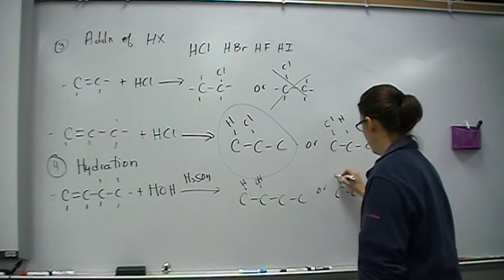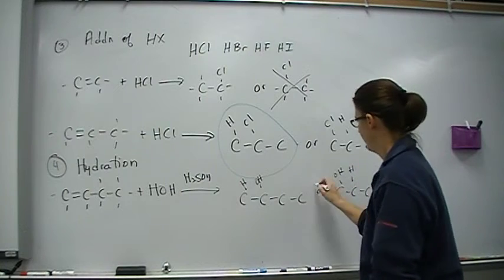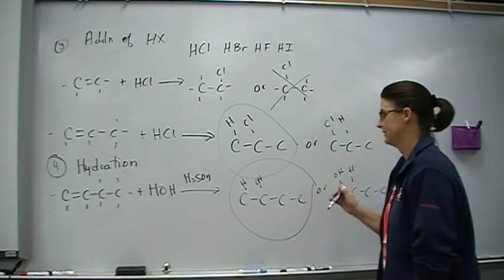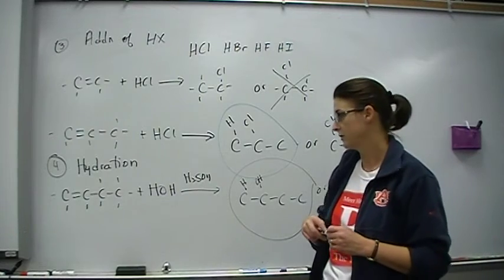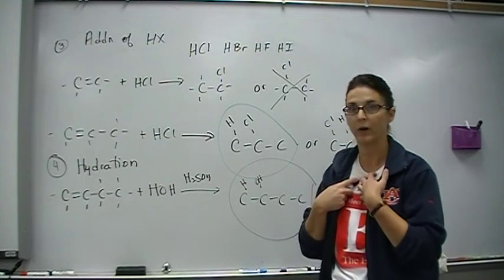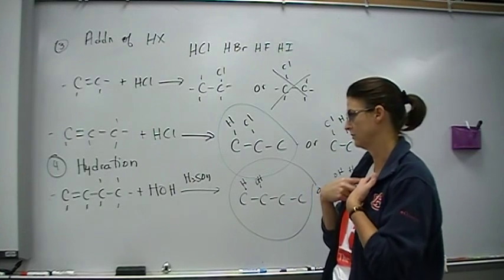Right. Major product. H is on the end. One, two, three, four. OH, H. This is the major product because the H is on the end. You will not have any majors and minors with cyclics. I will not give you any majors and minors with cyclics.